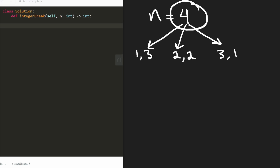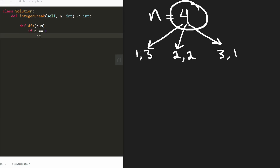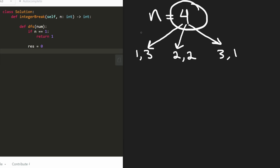Now I'm going to start coding. I'll create a recursive function DFS, defined inside our root function. We only pass in the number we're breaking down. There is a base case: if n equals one, it can't be further broken down, so we return one. We'll also initialize a variable result set to zero — though I'll change that in a moment. Then we'll create a for loop because given a number num, we can break it up into many portions.